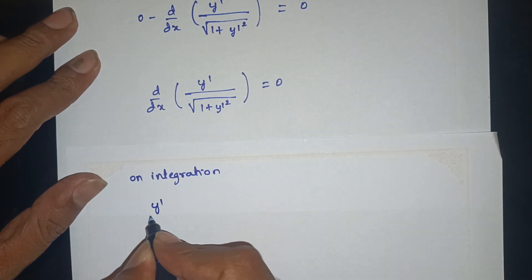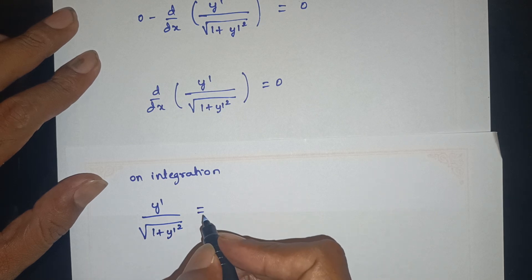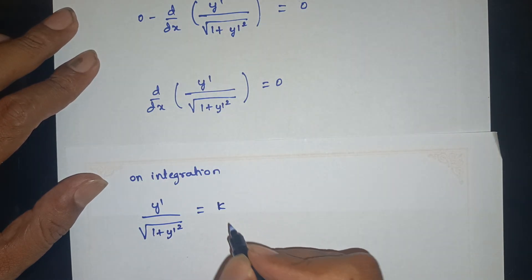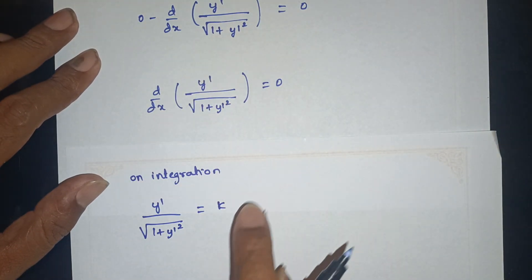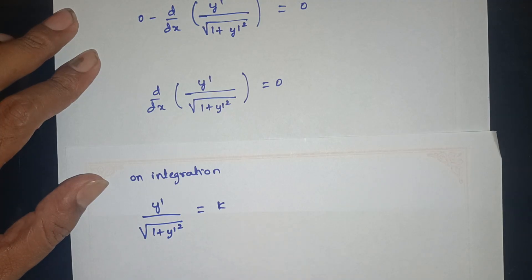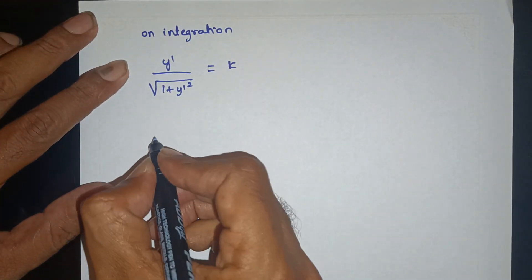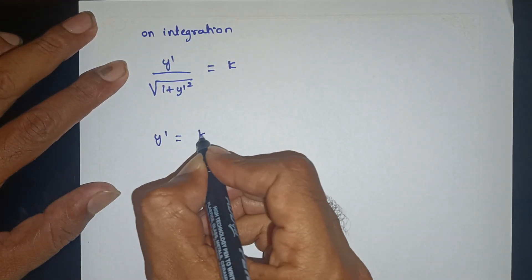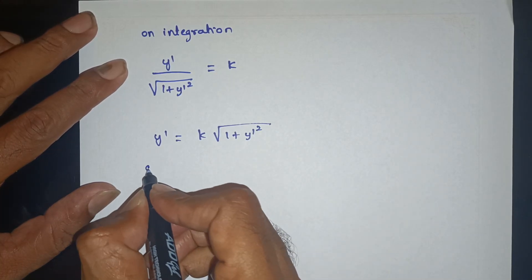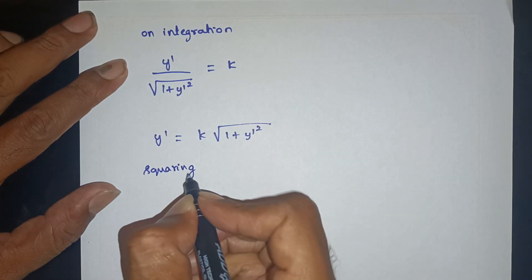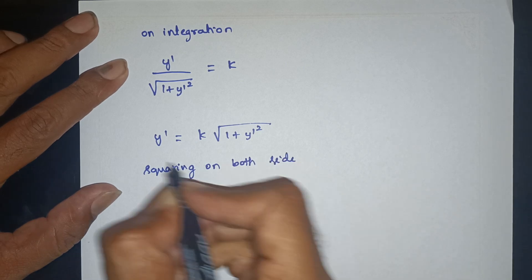Integration gives y' / sqrt(1 + y'²) = k, where k is a constant. Squaring both sides: y'² = k²(1 + y'²).